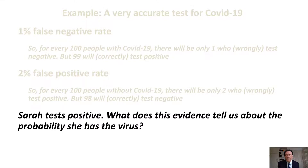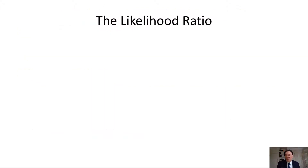Let's suppose that Sarah takes a test and tests positive. What does that tell us about the probability that she has the virus? What the likelihood ratio does is tell us about the probative value of that evidence. Let's have a look at how the likelihood ratio is defined and what it can tell us about that type of evidence.